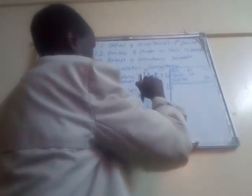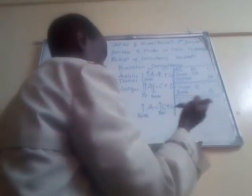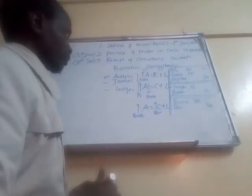For the second journal, the asset has gone up through printer, so we debit printer account by 12,000. And we credit bank account by 12,000 since we paid in cash. For the third journal, bank has gone up so we debit bank by 30,000. Revenue causes capital to go up, so we credit revenue by 30,000. Those are our summary journals.